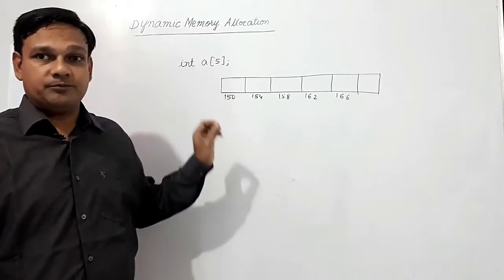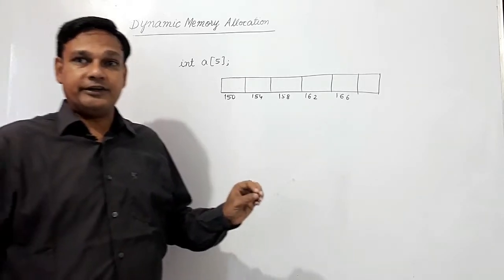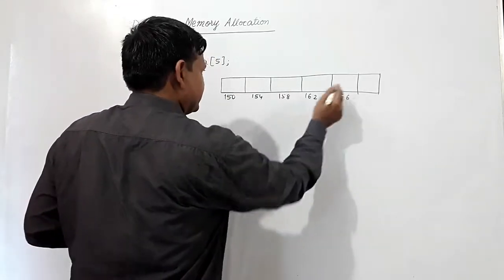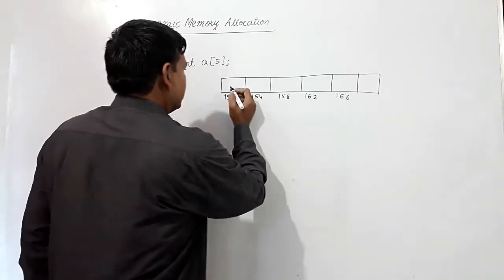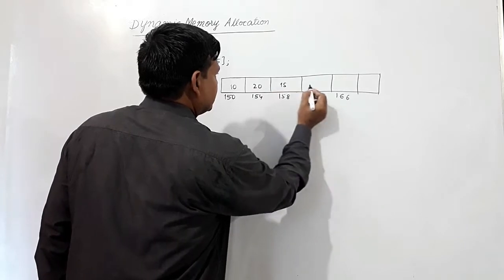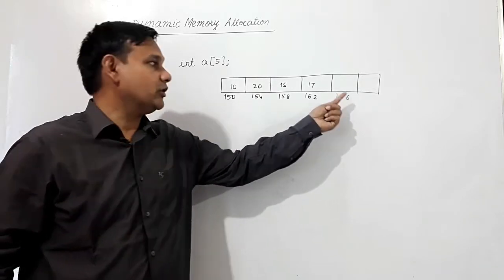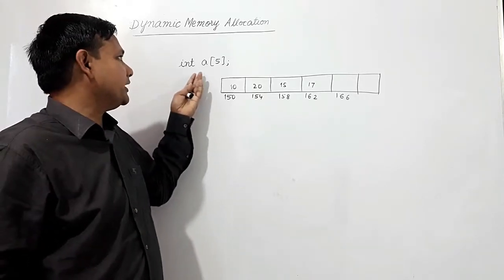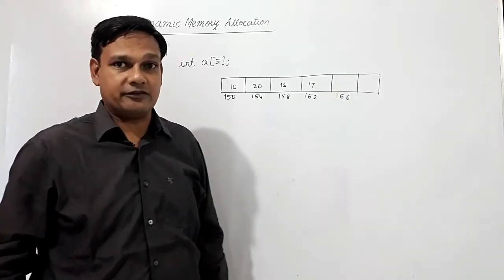If I have to store some values and there are only three or four values to be stored, for example 10, 20, 15, 17, the last block goes unused. This is wastage of memory because I declared this array statically, not dynamically, so unused slots represent wasted memory.